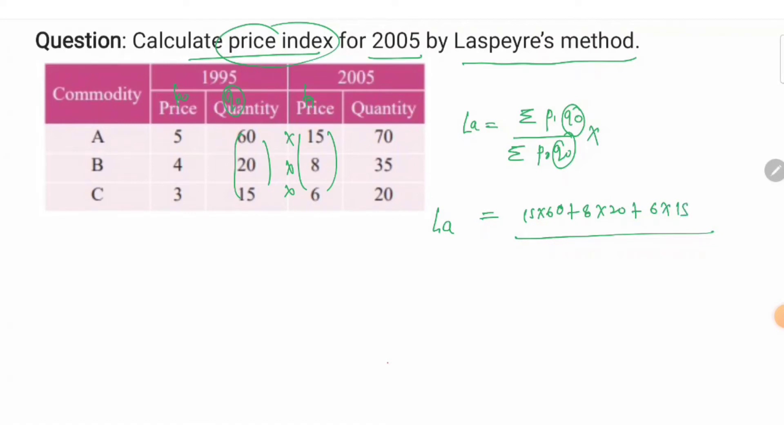Basically we need to multiply all the prices of 2005 with the quantity of 1995 and then divide with the multiplication of the price and quantity of 1995. So it will be 5 into 60 plus 4 into 20 plus 3 into 15.